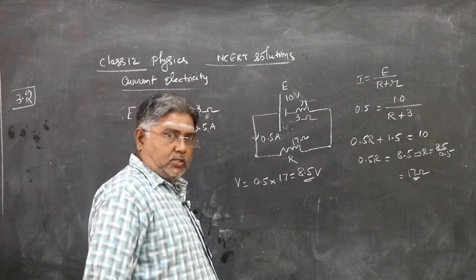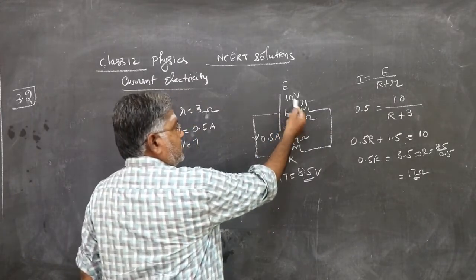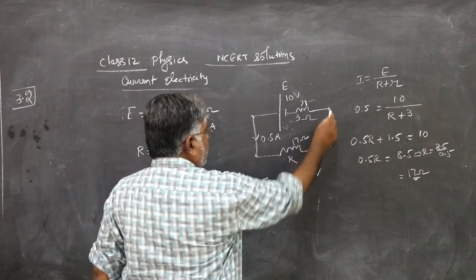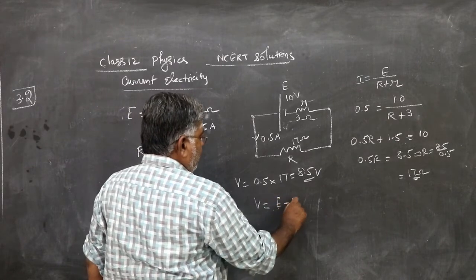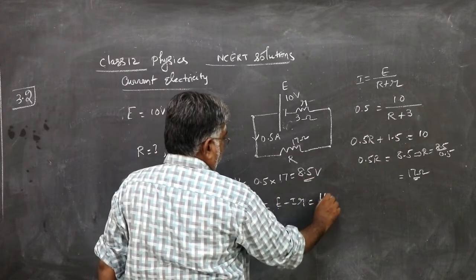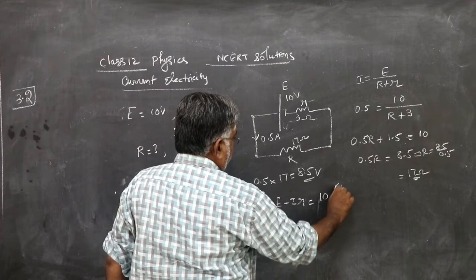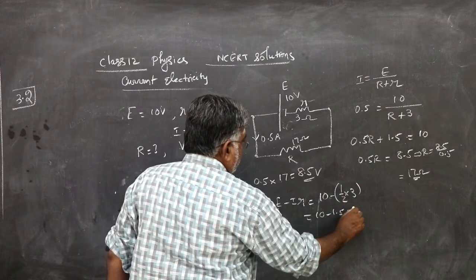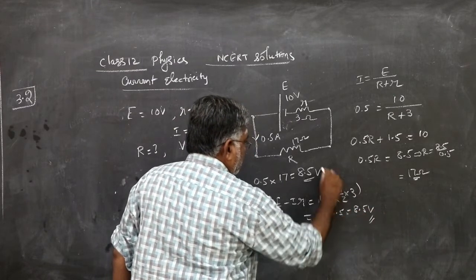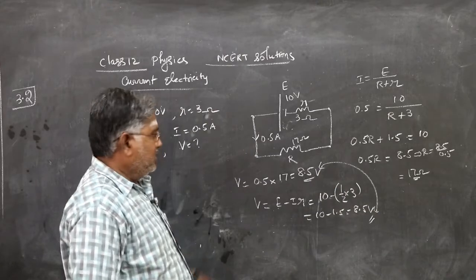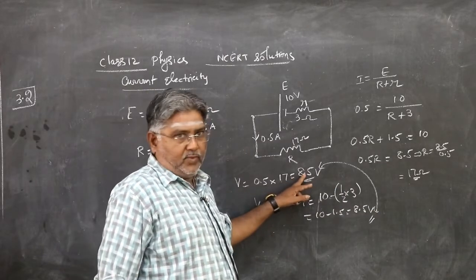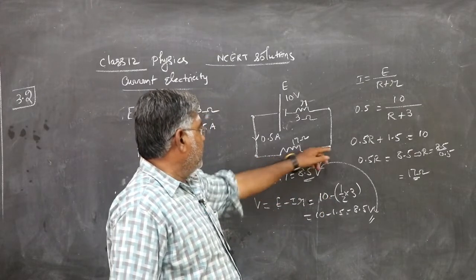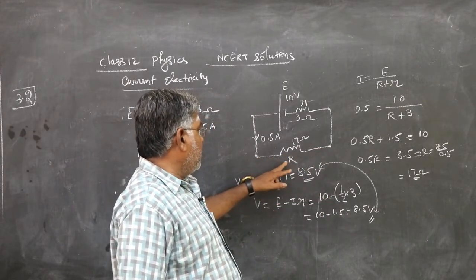You can cross check your answer. Take this internal resistance inside. So, whatever the PD here should be the PD here. So, terminal PD V will be E minus Ir. What is E? 10. What is I? Half. What is r? 3. 10 minus 1.5, which is 8.5 volt. You see, both answers are correct. This is easier, in one step you are getting. Sometimes here you may go wrong. Instead of minus you may put plus. So, it is better to use this one.